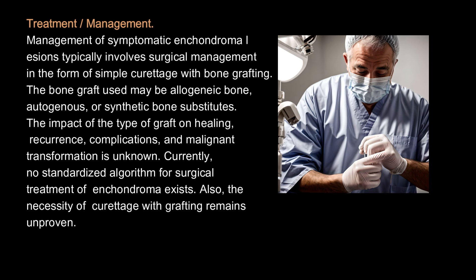Treatment and Management. Management of symptomatic enchondroma lesions typically involves surgical management in the form of simple curettage with bone grafting. The bone graft used may be allogeneic bone, autogenous, or synthetic bone substitutes. The impact of the type of graft on healing, recurrence, complications, and malignant transformation is unknown. Currently, no standardized algorithm for surgical treatment of enchondroma exists, and the necessity of curettage with grafting remains unproven.